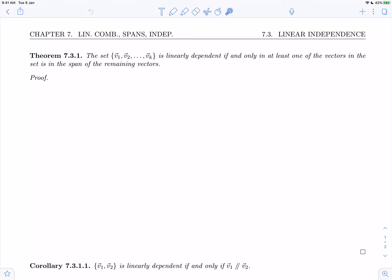And we're going to do that by starting with theorem 7.3.1. So let's go ahead and read the statement of the theorem. The set v1, v2 through vk is linearly dependent if and only if at least one of the vectors in the set is in the span of the remaining vectors.